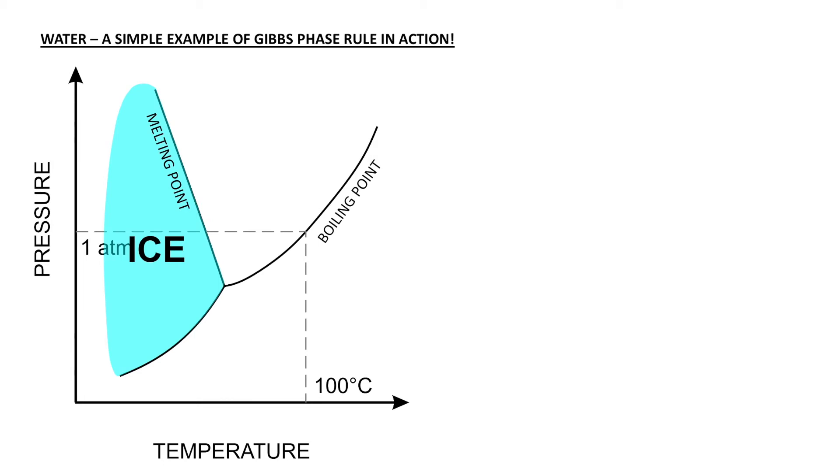To make this diagram easier to comprehend, in this portion here we have ice, which is separated by its melting point from water. Water exists in this field here, which is then separated from vapor by its boiling point. And then up here we have things like supercritical fluids, but we don't need to worry about that today.